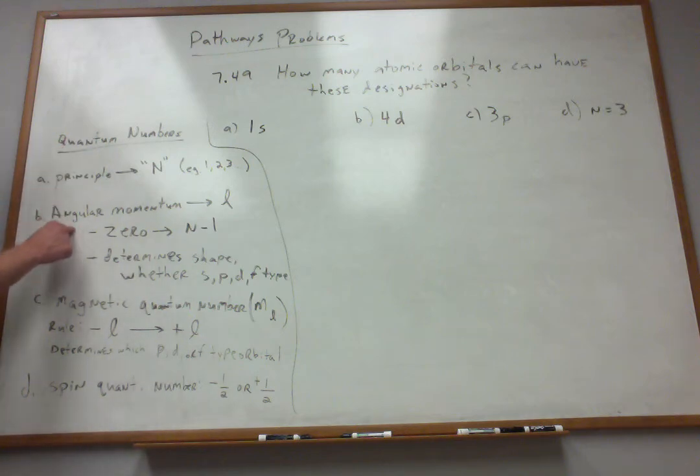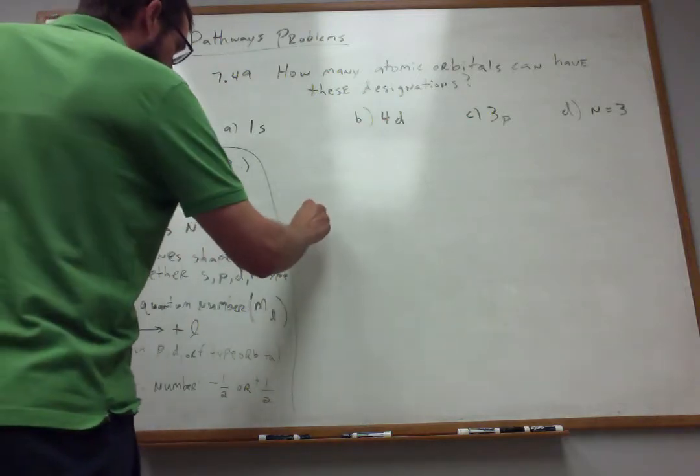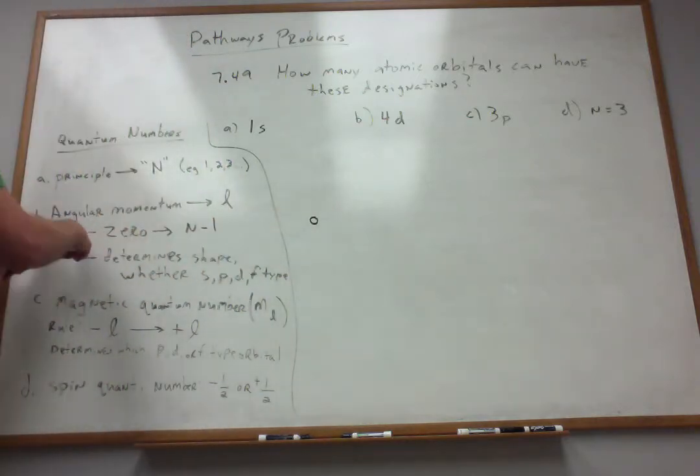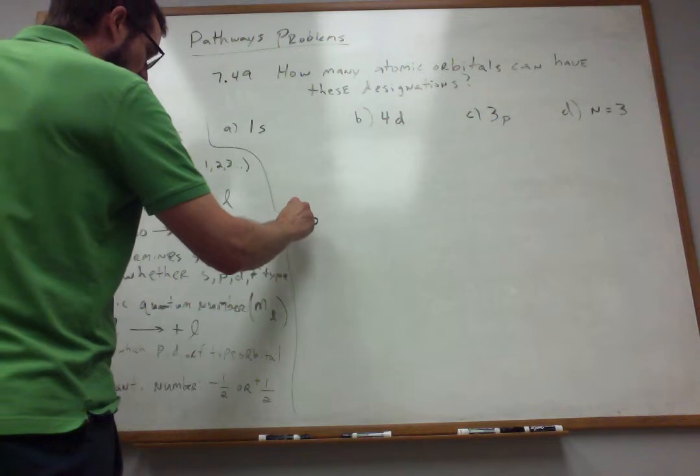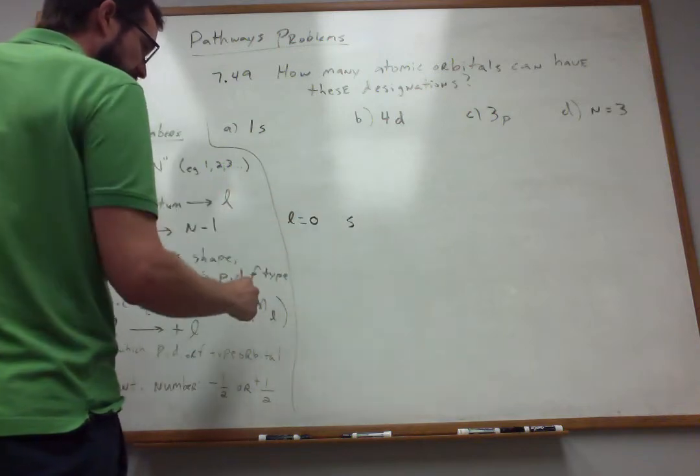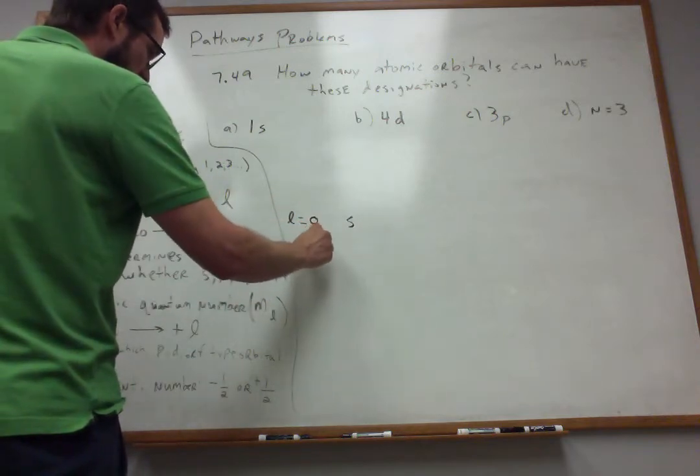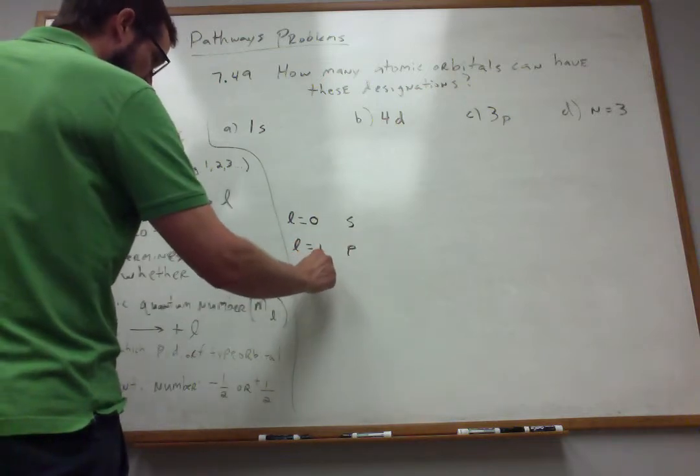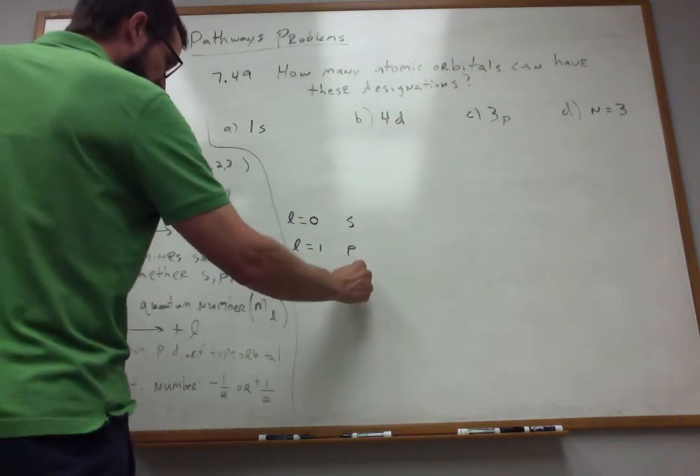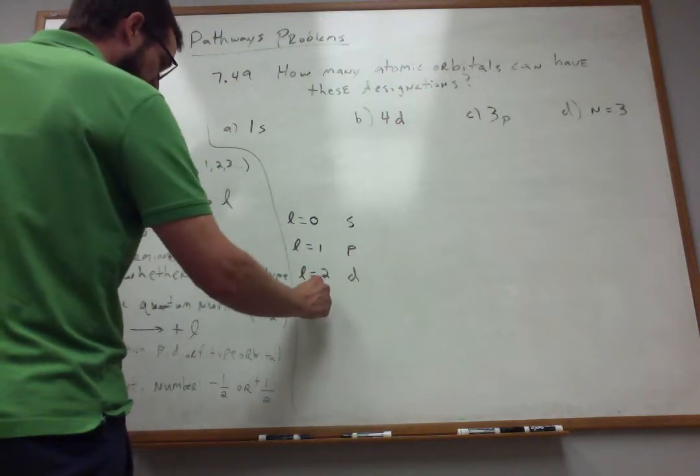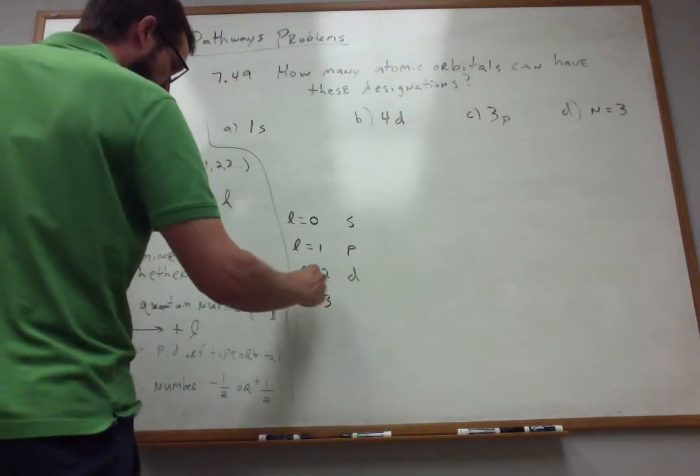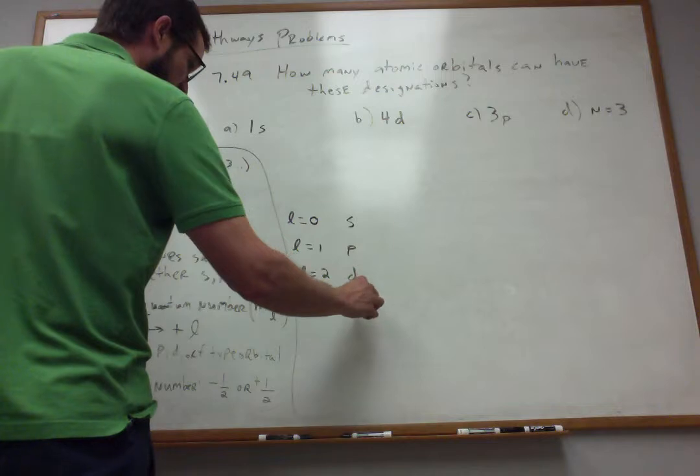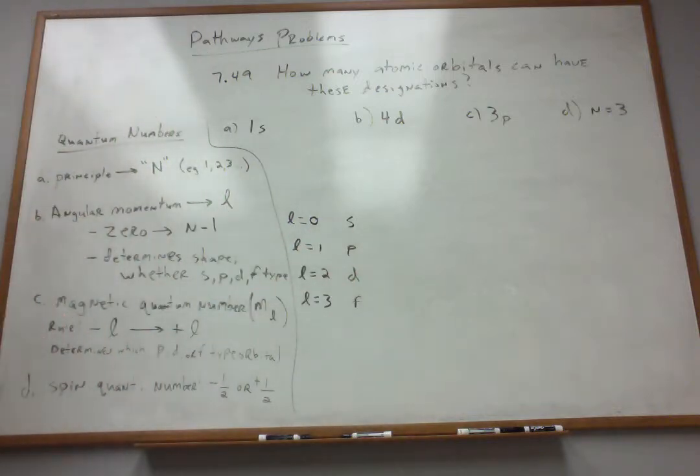This one determines which type of orbital you've got. For instance, if the angular momentum number is 0, you've got an S-type. If the angular momentum is 1, you've got a P-type. If it's 2, you've got a D-type. And if L ends up being 3, which was disallowed in this last example case, but sometimes it's allowed, that's an F-type.